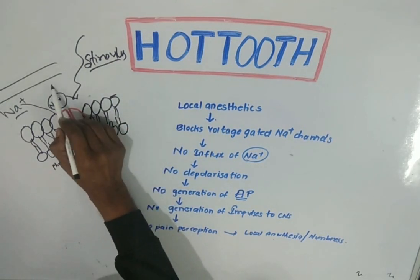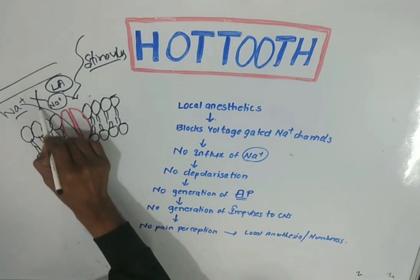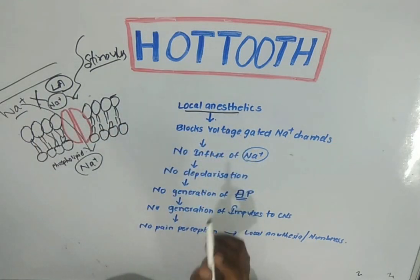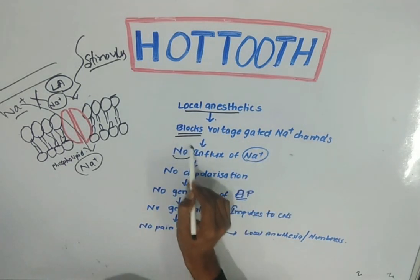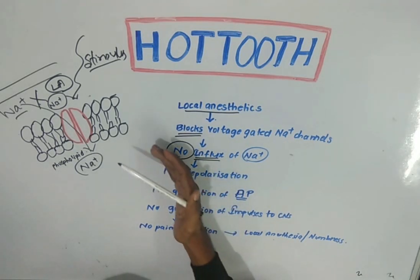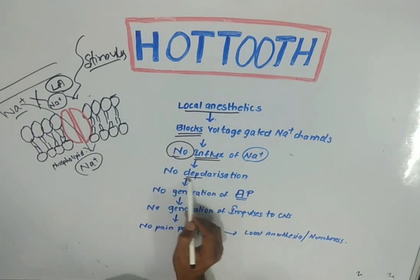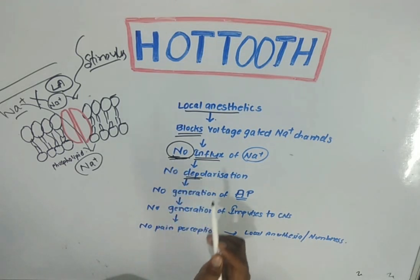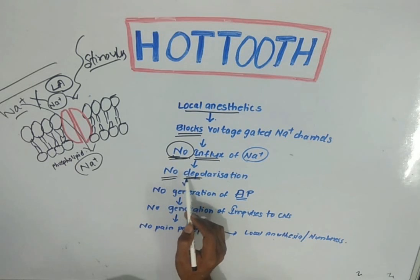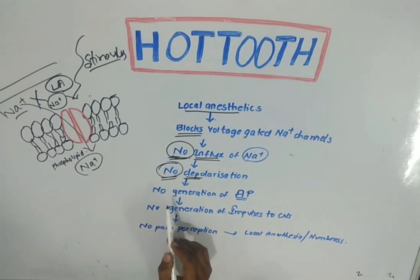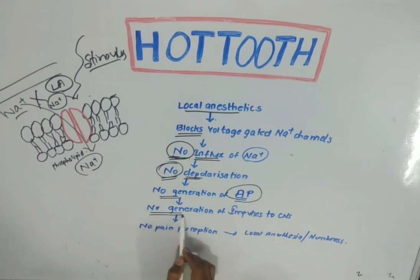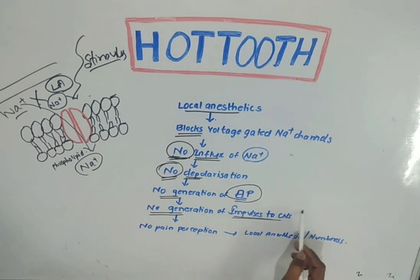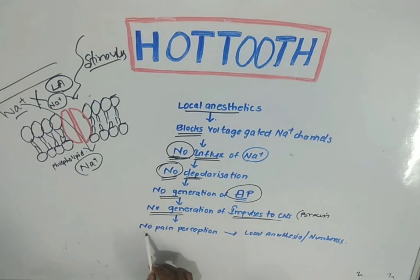The local anesthetic solution blocks the sodium-gated channels such that there won't be an influx of sodium ions. Since sodium ions are required for depolarization, the blockage of sodium ion influx means there won't be generation of depolarization, so there won't be generation of action potential, and ultimately there is no generation of impulses to the central nervous system.